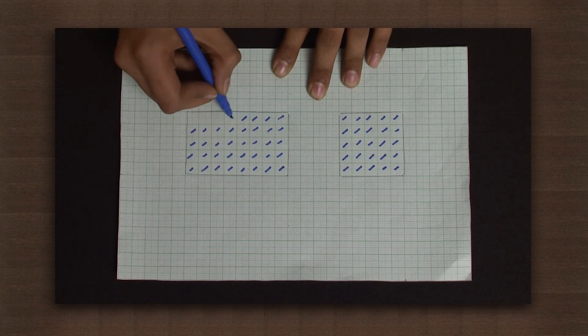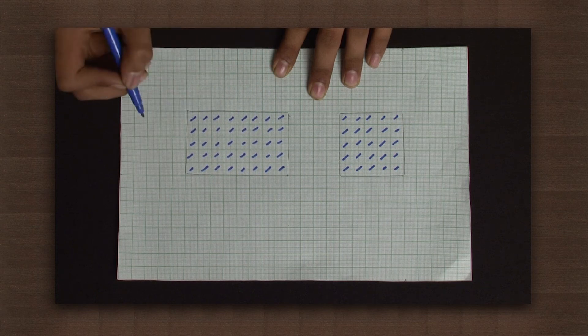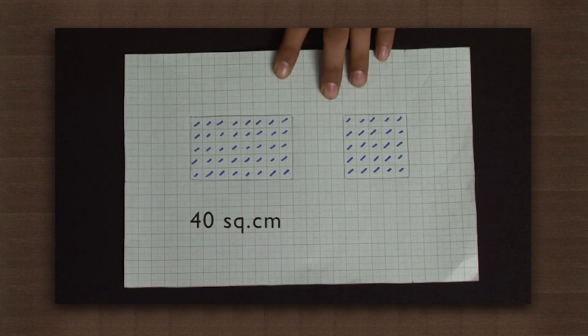While the rectangle occupies 40 blocks, so its area is 40 square centimeters. So we saw how to use a graph paper to accurately determine the area of a quadrilateral with every angle being 90 degrees.